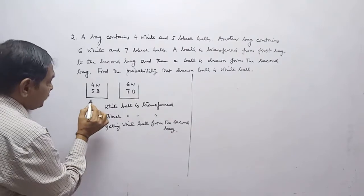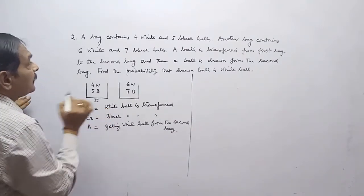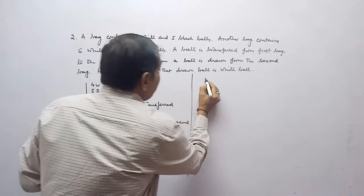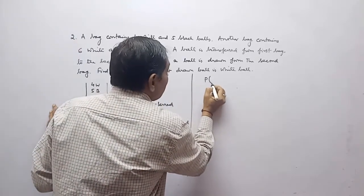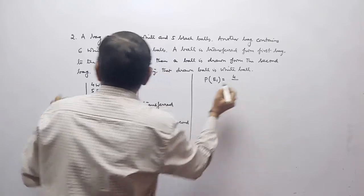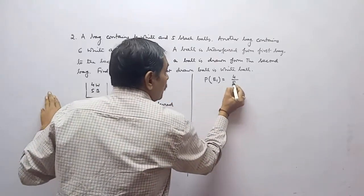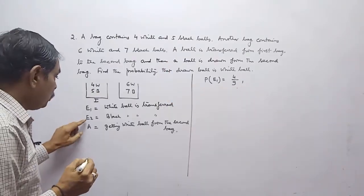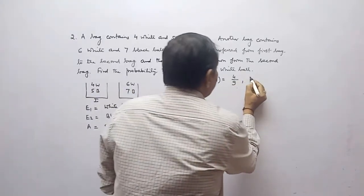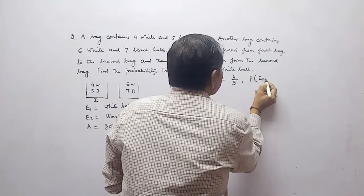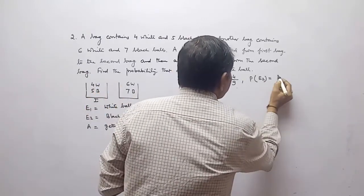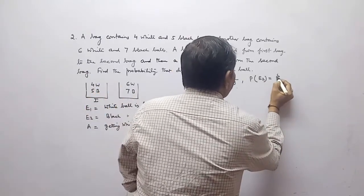In the first bag, we have four white balls. So probability of E1 is four upon nine total. And E2 is black ball is transferred, so P(E2) is equal to five upon nine, since five black balls are there.